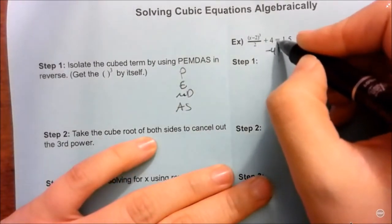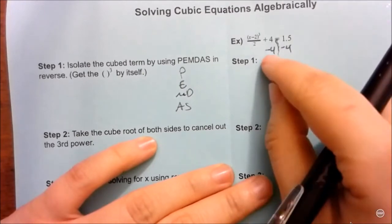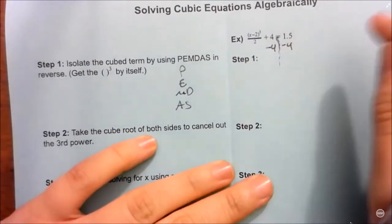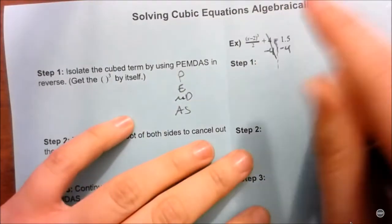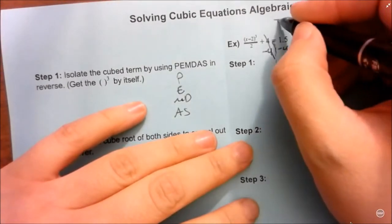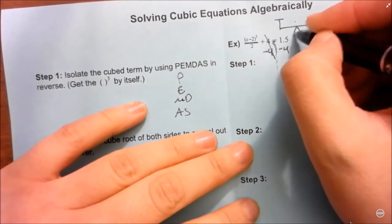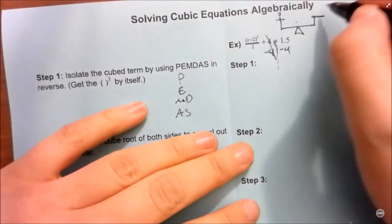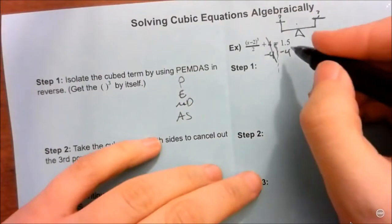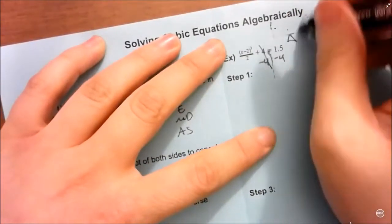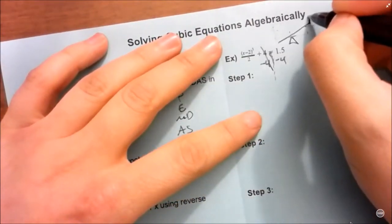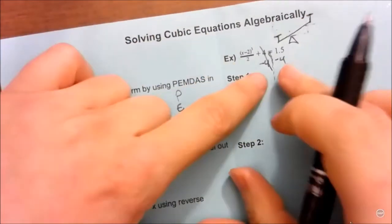When I say 'both sides,' the equal sign is a separator — so both sides means here and on the other side of the equation. Think of it like a balance: if you've ever used those balance scales in science, both sides have to stay balanced, otherwise it tips. So there's a balanced equation, and if you don't do the same thing to both sides, one side gets a lot bigger than the other and you don't want that.